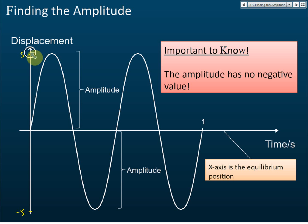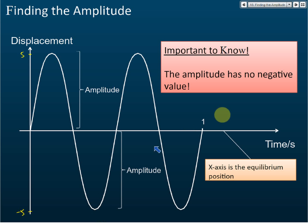At this point the displacement is 5 and the amplitude is 5. At this point the displacement is negative 5, but the amplitude is still 5. So do not give negative values to the amplitude.